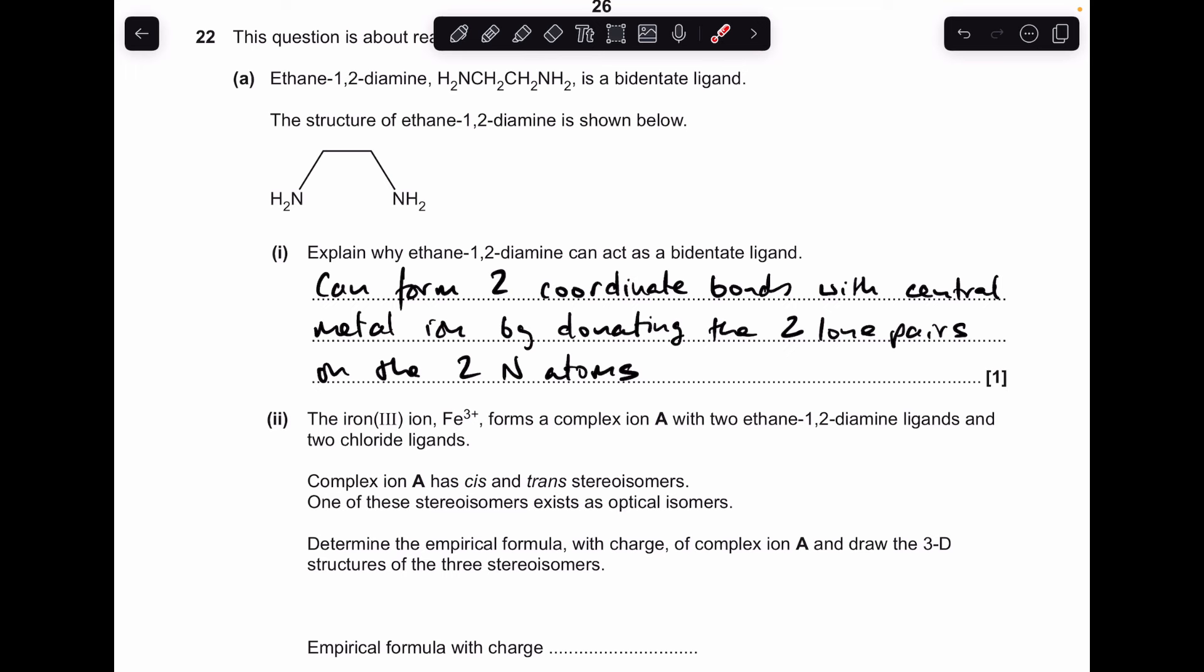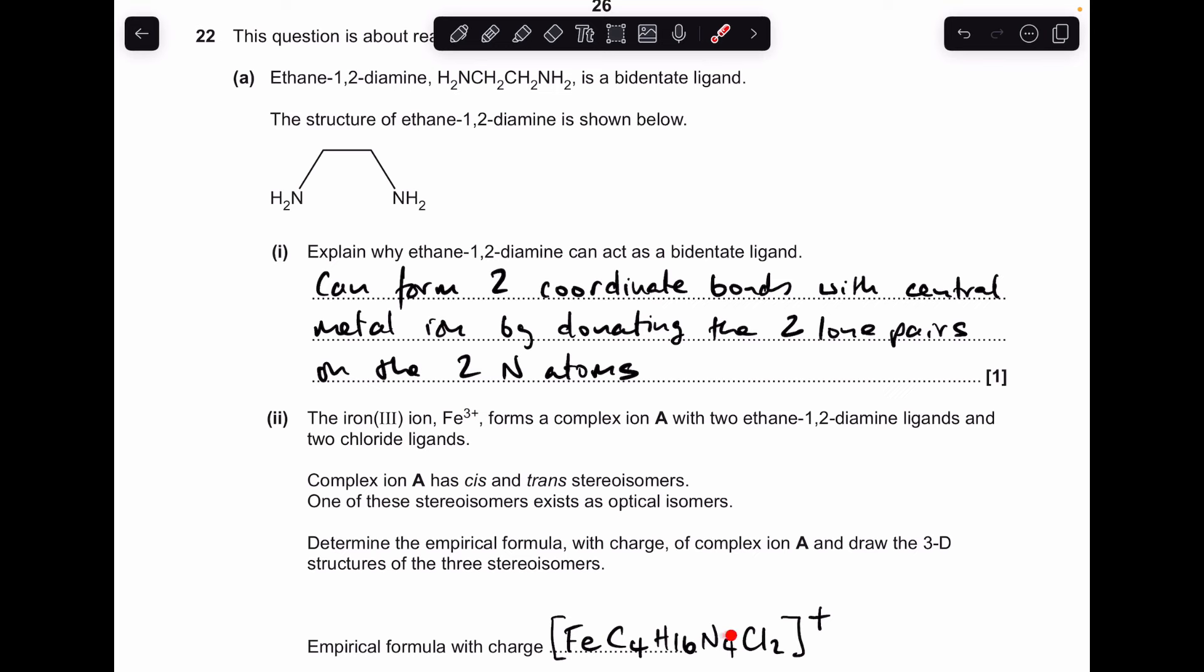Next part, we'll just quickly talk about the charge, and then I'll bring up the empirical formula. So we've got an Fe³⁺ ion in the middle. The two bidentate ligands are neutral. The two chloride ions have a 1 minus charge each, so the overall charge is going to be 1 plus, and the empirical formula looks like that.